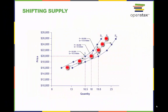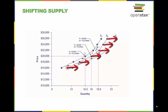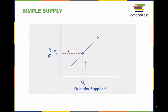Decreased supply means that at every given price, the quantity supplied is lower, so that the supply curve shifts to the left from S0 to S1. Increased supply means that at every given price, the quantity supplied is higher, so that the supply curve shifts to the right from S0 to S2. The supply curve can be used to show the minimum price a firm will accept to produce a given quantity of output.